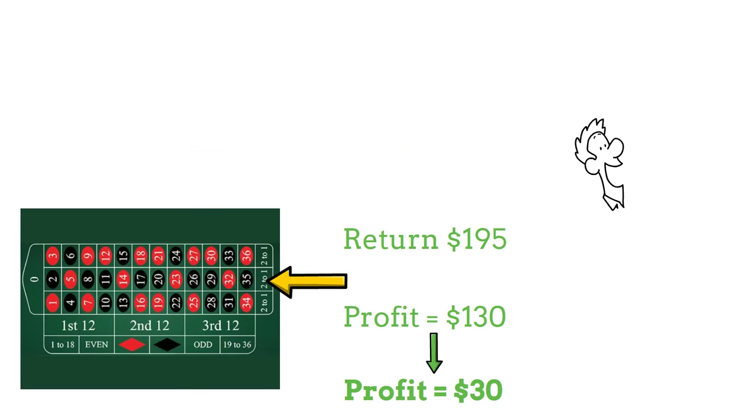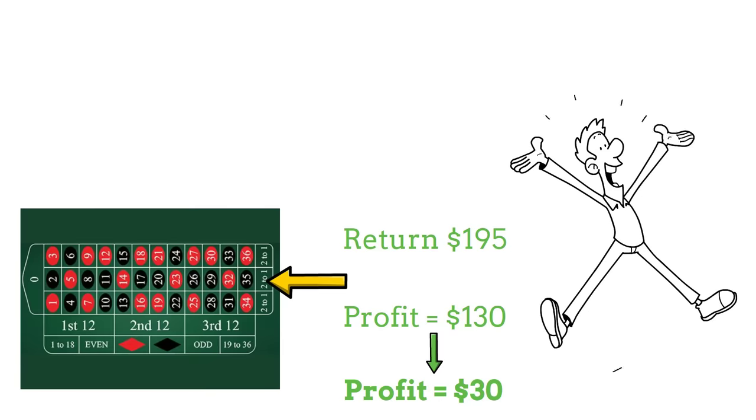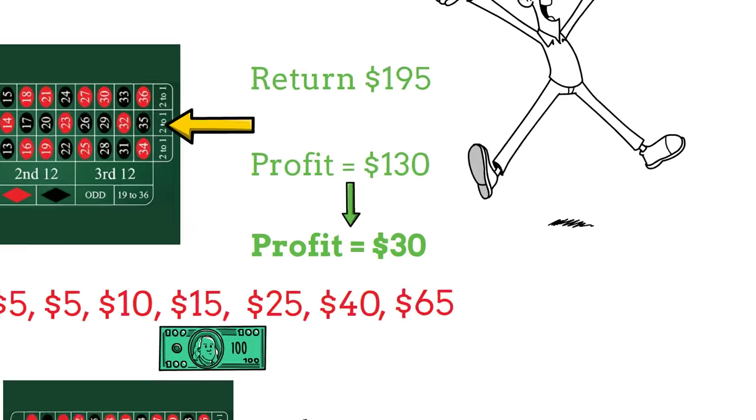Well this is obviously miles better than the earlier strategy of using this sequence on the even chance bets, but let's not forget we are less likely to win our column bets than we are to win our even chance bets on red. For that reason, let's extend our losing streak up to 8 losses in a row and see how this roulette betting system holds up.